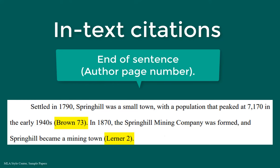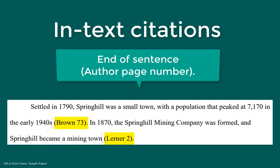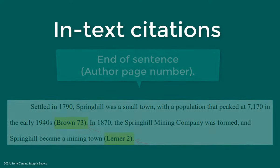In this case, you write a statement that includes information from a source, then you include your in-text citation. This is an open parenthesis, the author's last name, the page number, a closed parenthesis, and a period to end the sentence. Note that the period is after the citation, so the citation is considered to be part of the sentence.